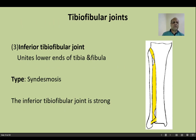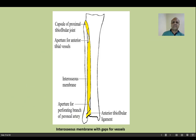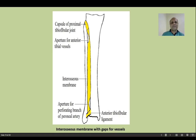The inferior tibiofibular joint is very strong. It is a syndesmosis that unites the lower ends of the tibia and fibula. A diagram showing the tibiofibular articulations and the apertures in the interosseous membrane completes the discussion of these joints. With this, the class on the ankle joint and tibiofibular joints concludes. Thank you for your time and consideration.